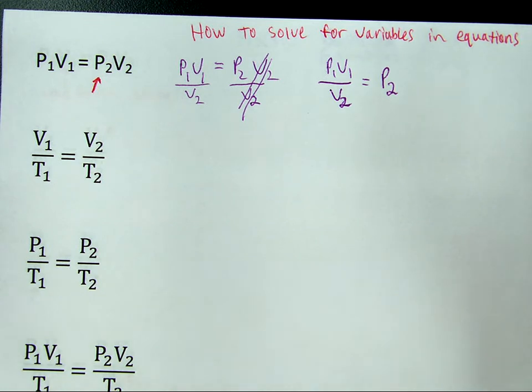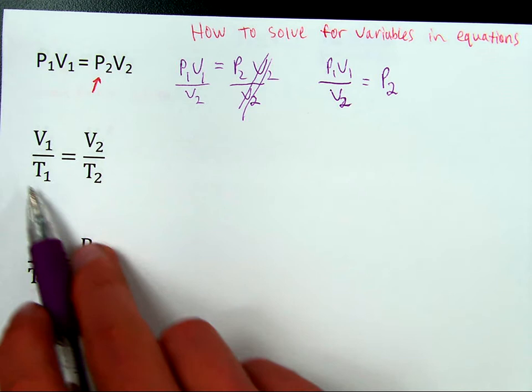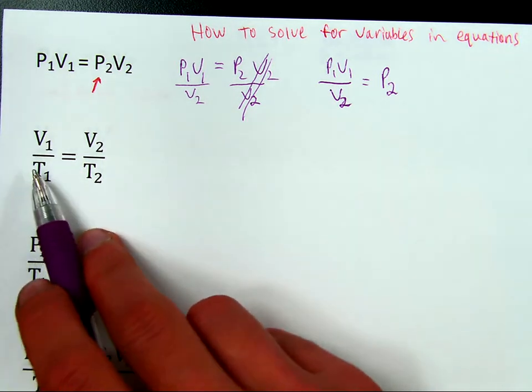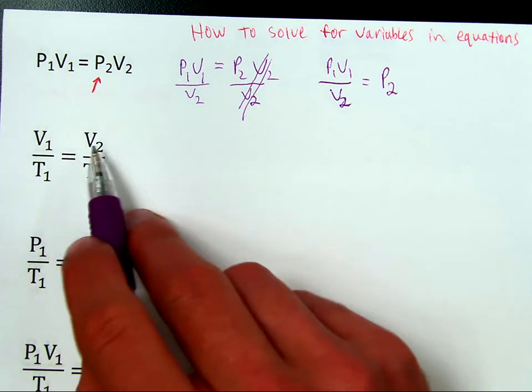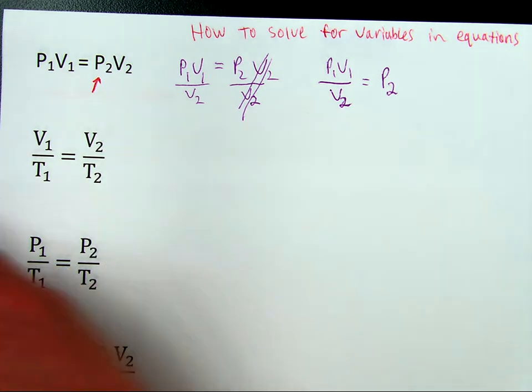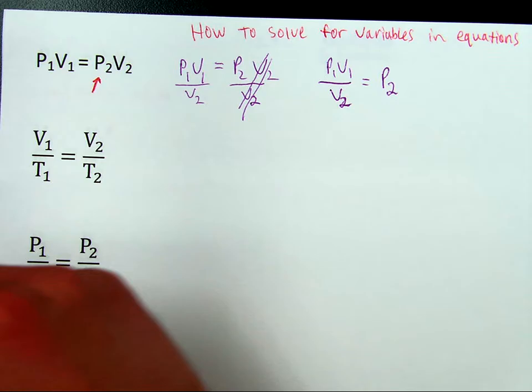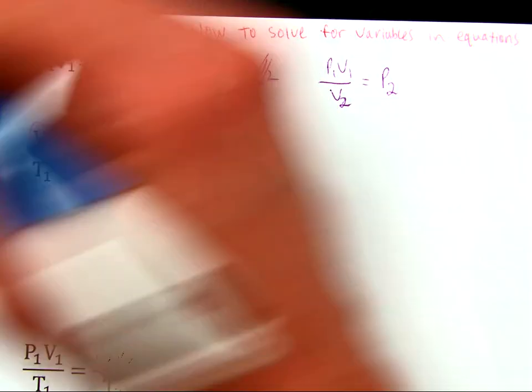So, let's look at another one. Supposing you want to find, let's see, you have something a little more complicated like this, where you have things divided and things multiplied. Or rather, you have something divided by something else. In a situation such as that, let's start simple. If suppose you want to find this one right here, the V1.